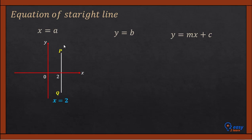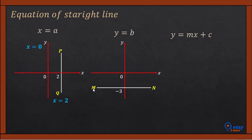A vertical line always has the form x equals a. So the equation of the y-axis is x equals 0. The second type is y equals b. Line MN is parallel to the x-axis, horizontal, and passes through the y-axis at negative 3, so its equation is y equals negative 3. The x-axis is also a horizontal line intersecting y at 0, so its equation is y equals 0.